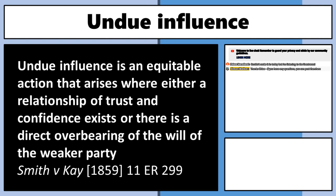Just note there are two categories. The first one splits into two types — sometimes written as category 2a and 2b, though that's not commonly used in Australia. One is the relationship of trust and confidence, which comes in two types. The other, sometimes called type one or class A, is the direct overbearing of will, which is pretty hard to prove. We'll get to that at the very end.